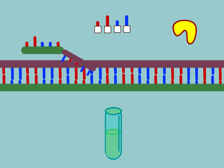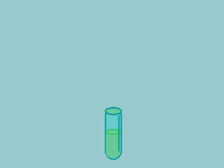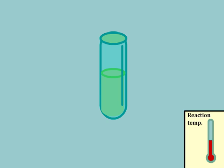All of these elements are mixed together in appropriate proportions and placed in an instrument called a thermocycler. This instrument can be programmed to change the temperature of the mixture through a series of repetitive cycles. The temperature of the reaction in this demonstration is represented in a lower right panel.